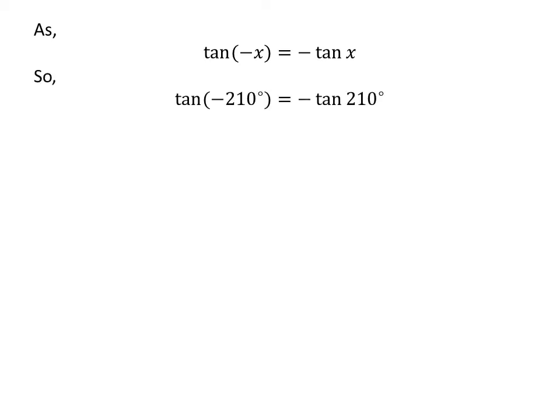Let us apply the above identity for tangent of minus 210 degrees. Here, x is 210 degrees. So tangent of minus 210 degrees is equal to minus tangent of 210 degrees.